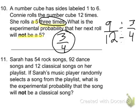Next, number 11. Sarah has 54 rock songs, 92 dance songs, and 12 classical songs on her playlist. If Sarah's music player randomly selects a song from the playlist, what is the experimental probability that the song will not be a classical song?